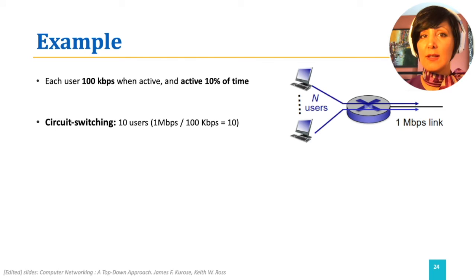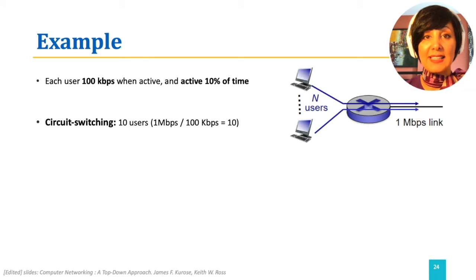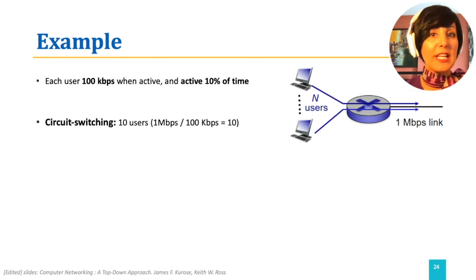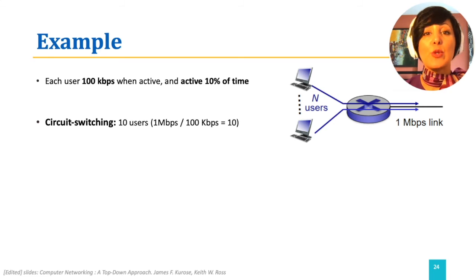If we use circuit switching, we can only have 10 users using this network at the same time, meaning N equals 10. This is because we have to reserve 100 kilobits per second out of the 1 megabits per second link for each of the users. We will not have any capacity for more than 10 users. Even knowing that each user is active only 10% of the time, we cannot release the resources during the 90% of the time the user is not active. Therefore, we can only support 10 users if we use circuit switching.